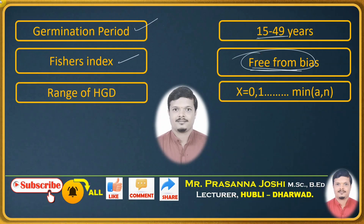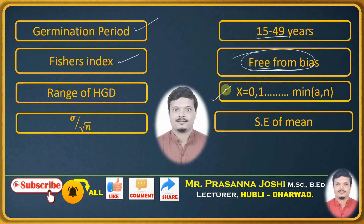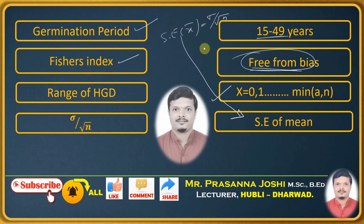Third match: range of hypergeometric distribution. The range is from 0, 1, and so on up to the minimum of a and n. That is matched accordingly. Next, sigma by root n is the standard error of x-bar — that is, the standard error of the mean. We know that formula, so sigma by root n is matched with standard error of mean.